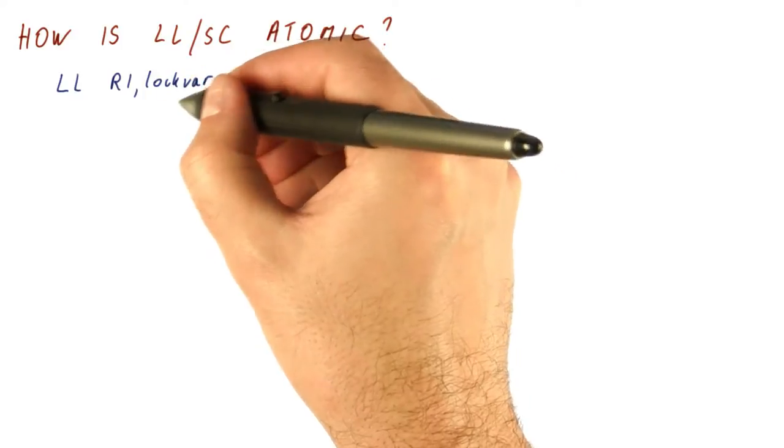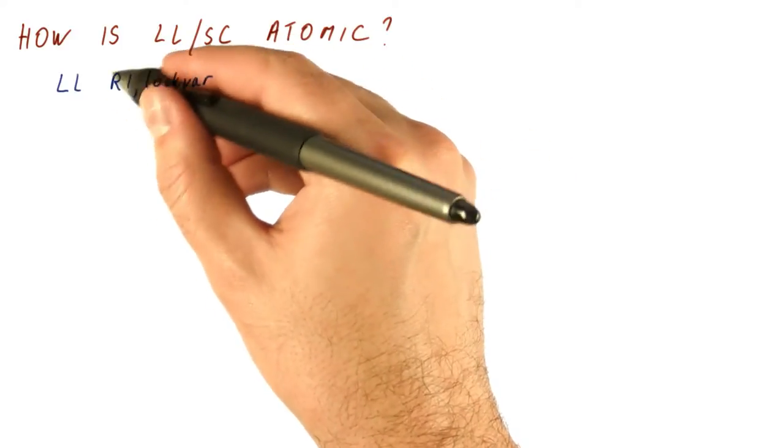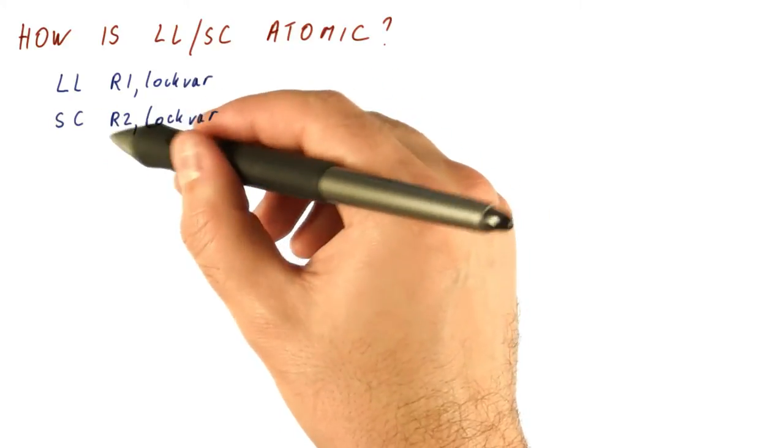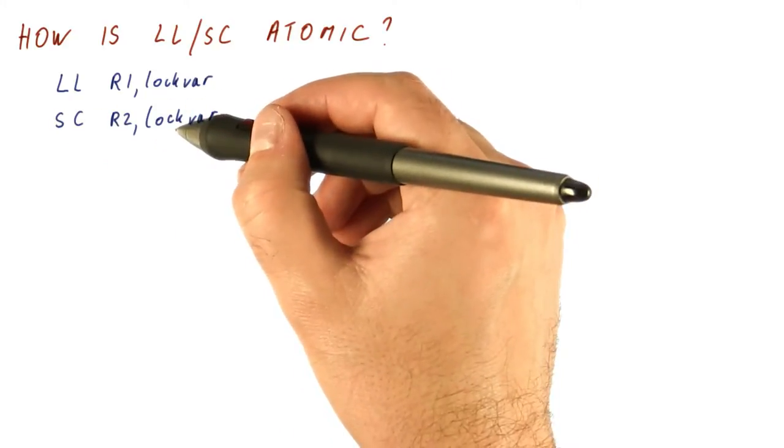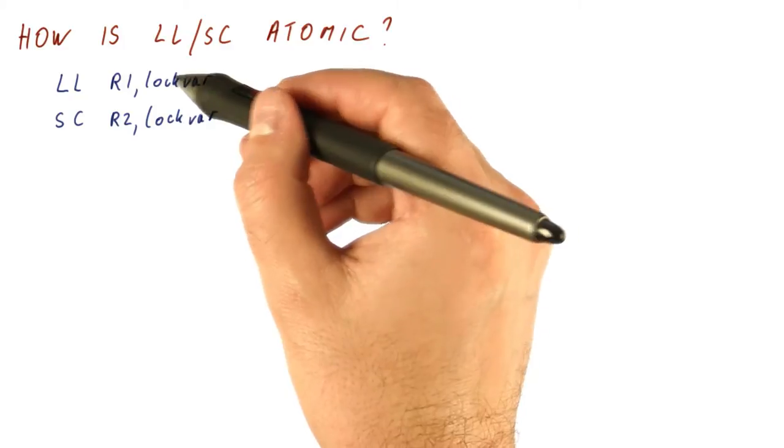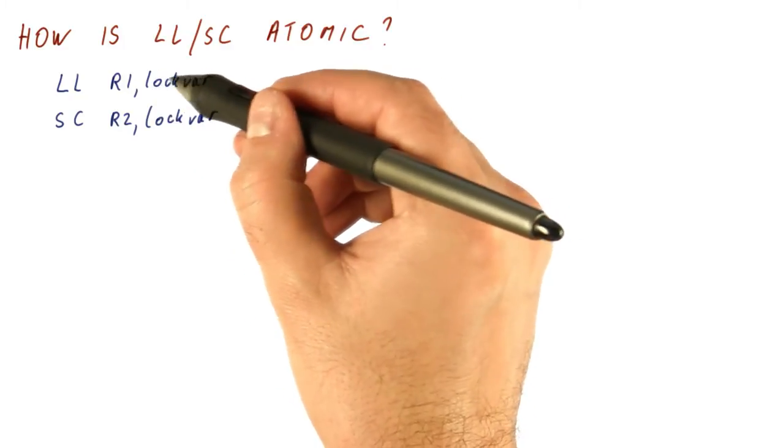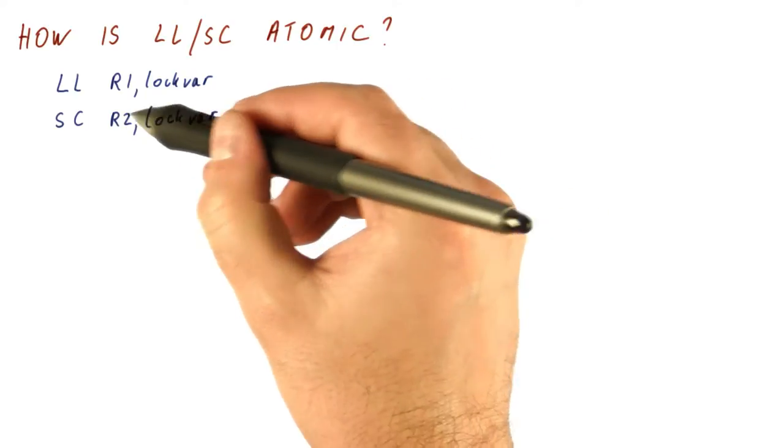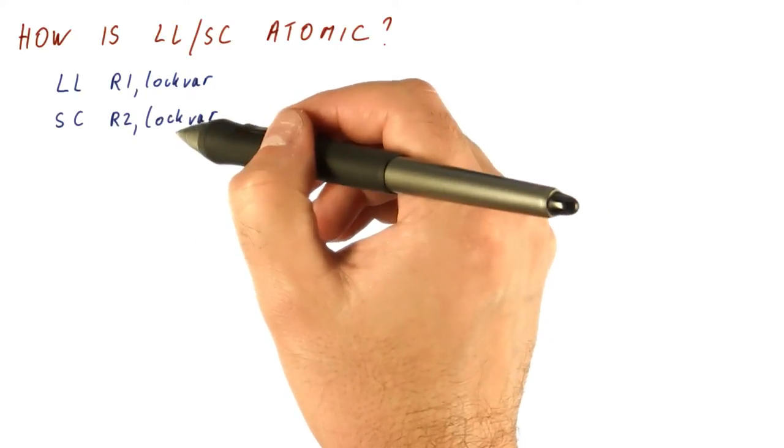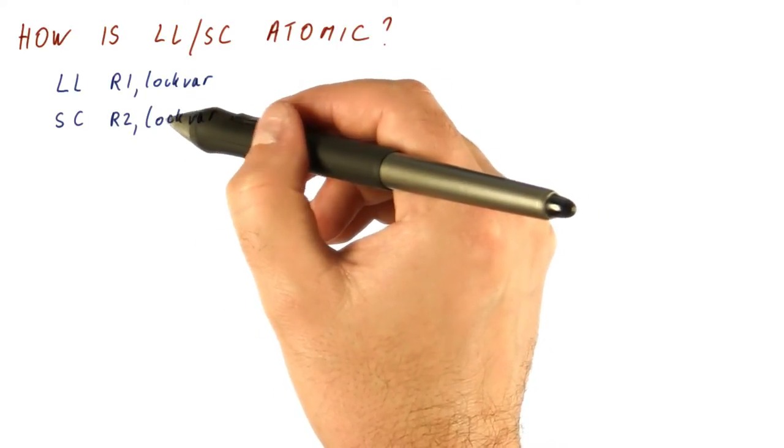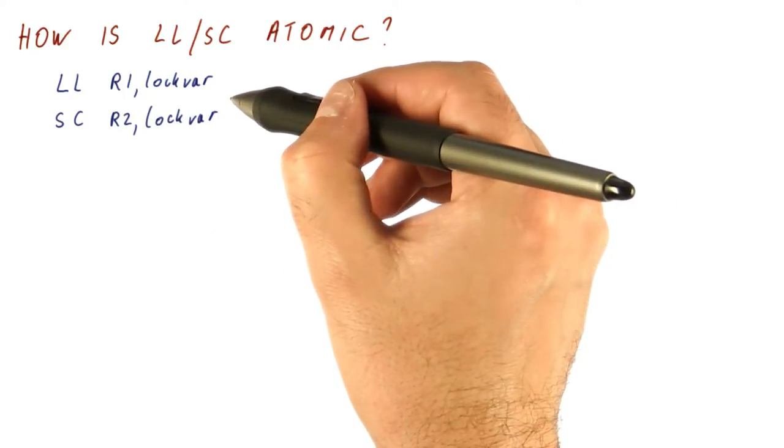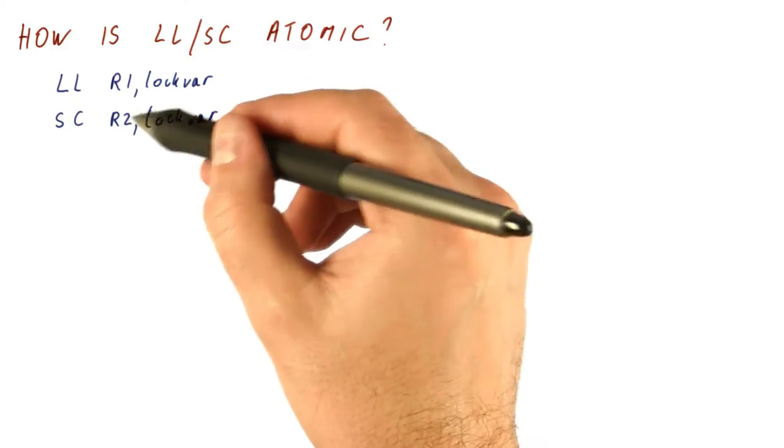We do a load link from a lock variable to R1. And then we do a store conditional of R2 into the lock variable. And what we need is that if the load link finds the lock available and we try to do a store conditional, then the store conditional should only succeed if the lock is still available at the time we try that. If somebody else has written into the lock, then store conditional needs to fail.